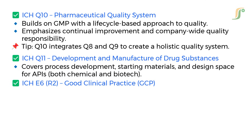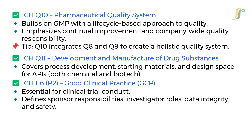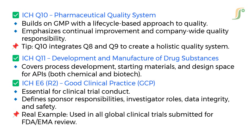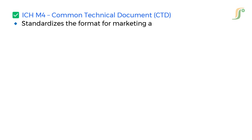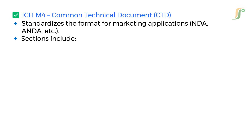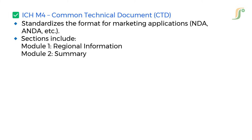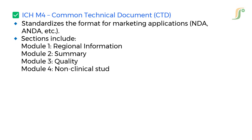ICH E6 — Good Clinical Practice (GCP) — is essential for clinical trial conduct. It defines sponsor responsibilities, investigator roles, data integrity, and safety. It is used in all global clinical trials submitted for FDA and EMA review. ICH M4 — Common Technical Document — standardizes the format for marketing applications such as NDA and ANDA. This includes Module 1 (Regional Information), Module 2 (Summary), Module 3 (Quality), Module 4 (Non-Clinical Study Reports), and Module 5 (Clinical Study Reports).